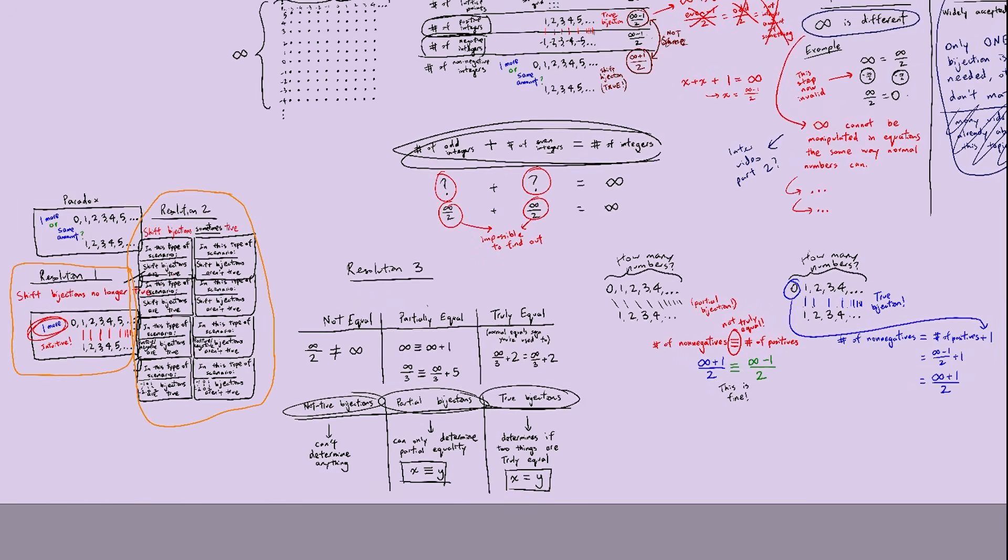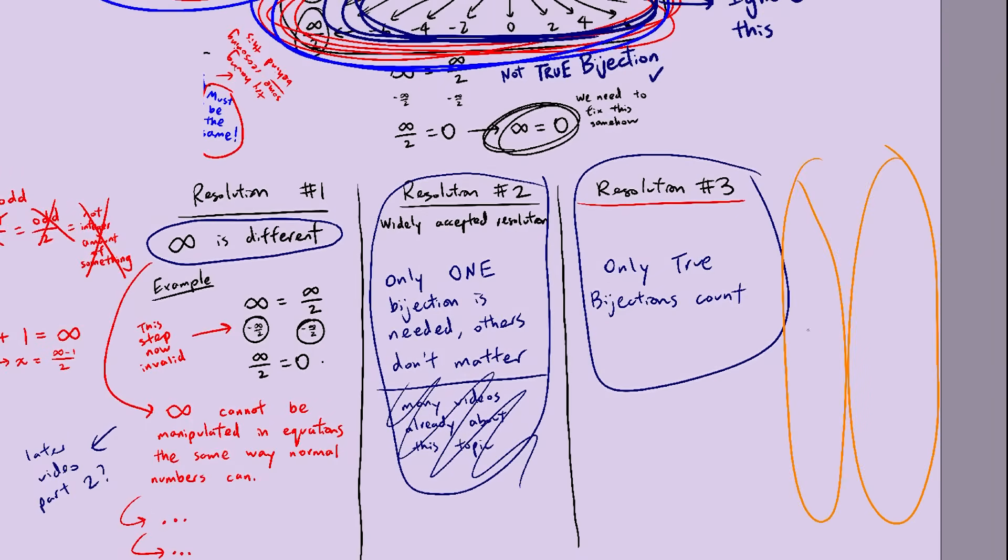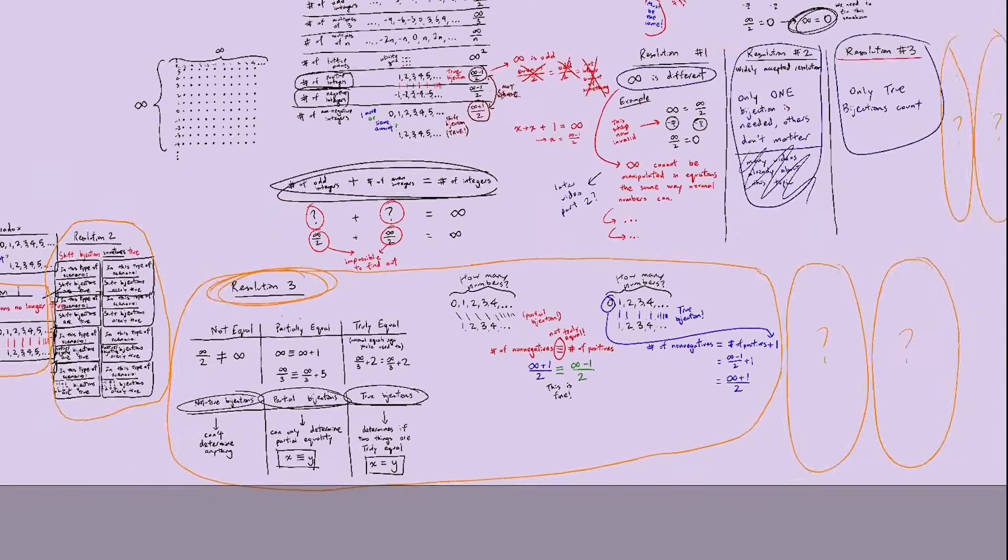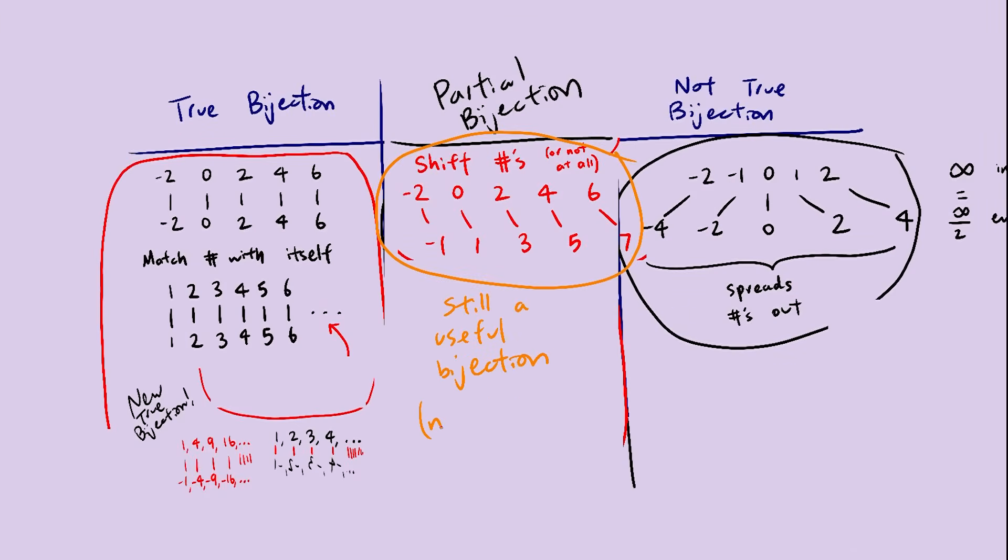So here we have our three resolutions to the paradox. Again, of course, there are definitely a lot more of these that I haven't thought of. But out of the three options we do have, I'm going to continue with the third one. This way, shift bijections are still a thing, they've just been downgraded.